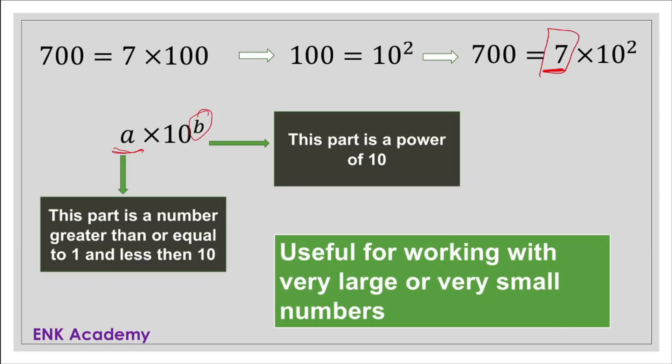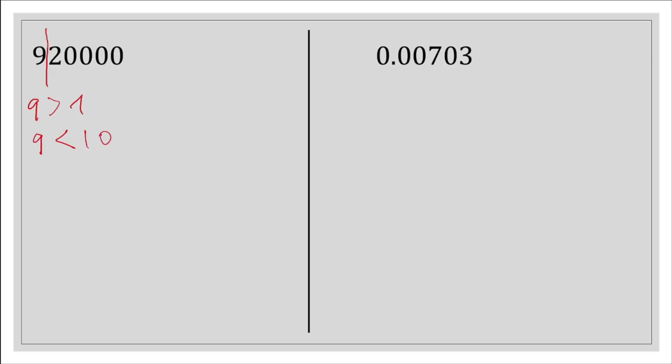Let's now dig into how this works. Imagine we have 920,000 and you are asked to write this number in standard form. We need the first part to be greater than 1 but less than 10. If we look at this number, we take 9, which is greater than 1 but less than 10. The remaining digits count as 1, 2, 3, 4, and 5. That means this number can be written as 9.2 times 10 to the power of 5.